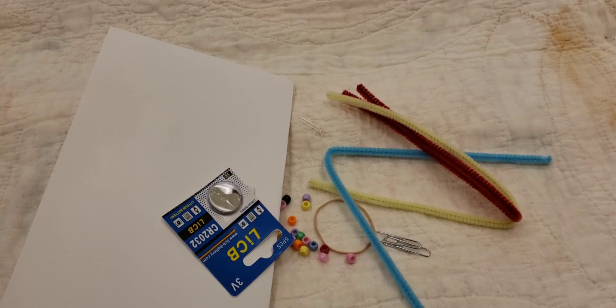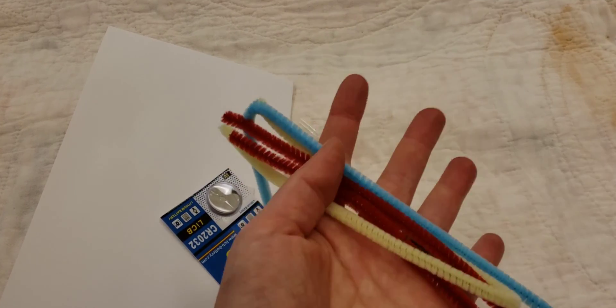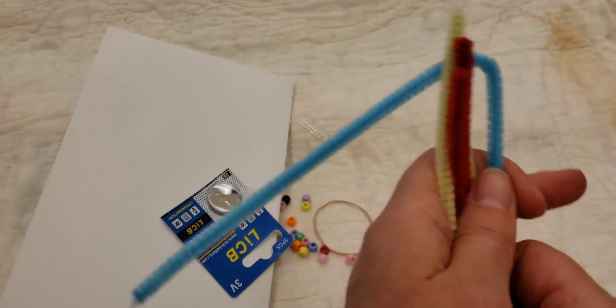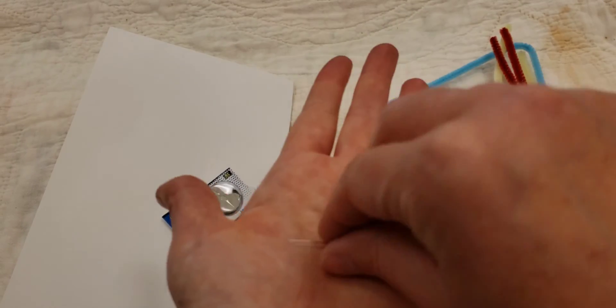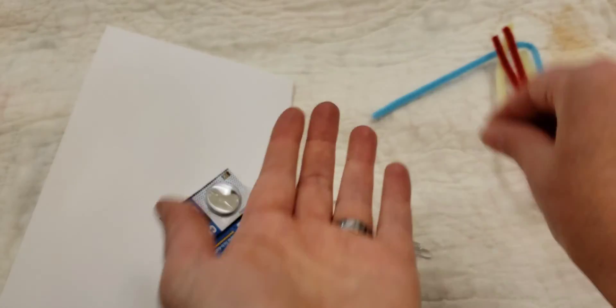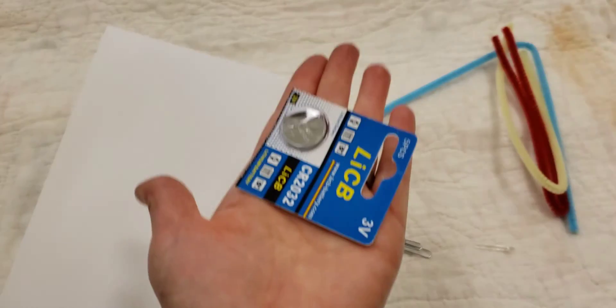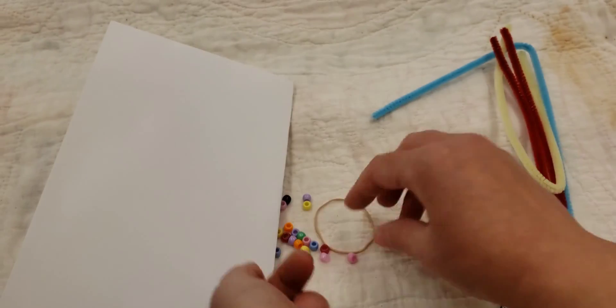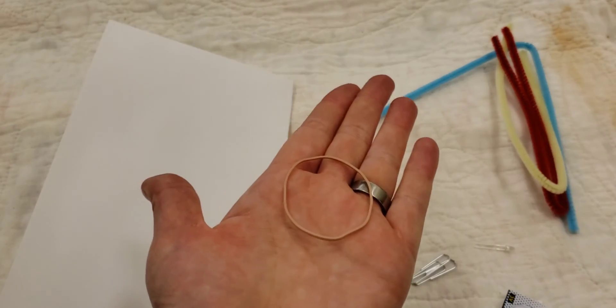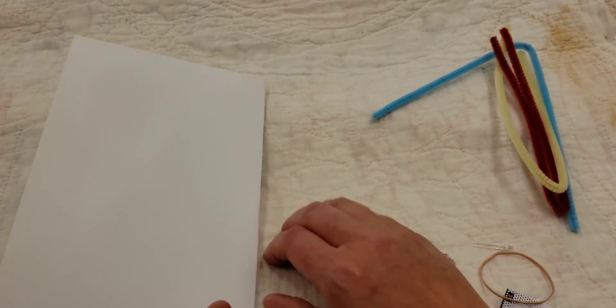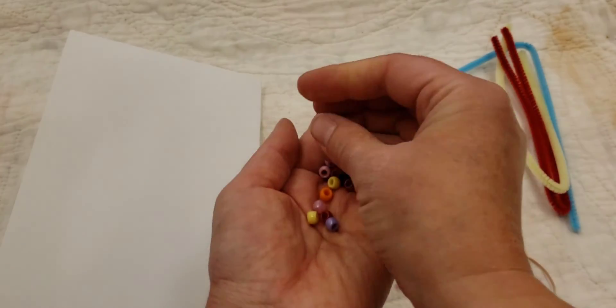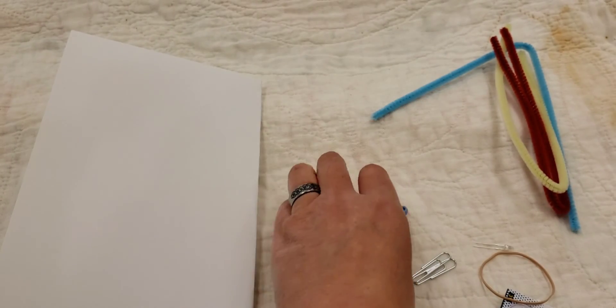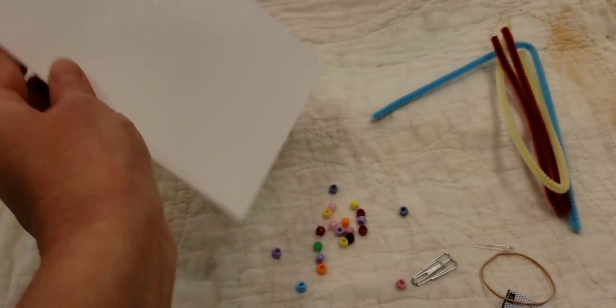Okay this is what you have in your kit. You have a bunch of chenille sticks or pipe cleaners, you have your LED light, you have your battery, two paper clips, a rubber band, a bunch of beads for decoration, and a piece of cardstock.